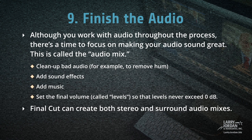Although you work with audio throughout the process, there's a time to focus on making your audio sound great. This is toward the end of the process — it's called the audio mix. Here you'll clean up bad audio, for example to remove hum, add sound effects, add music, and set the final volume — which is called levels — so that the levels never exceed 0 dB. Final Cut can create both stereo and surround audio mixes.